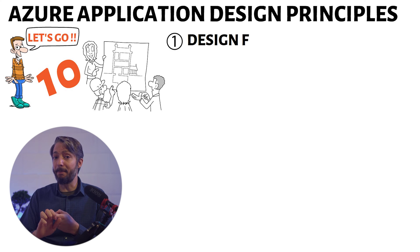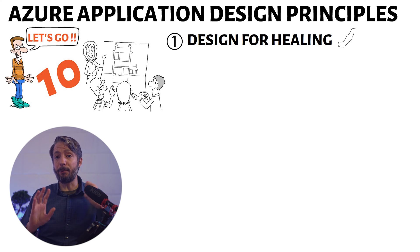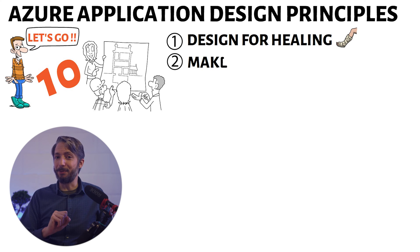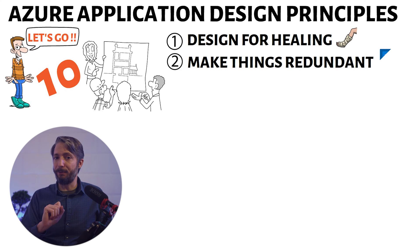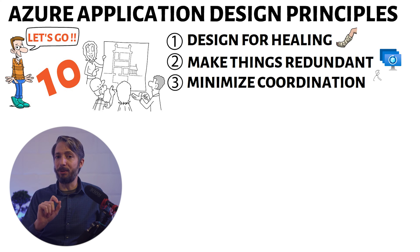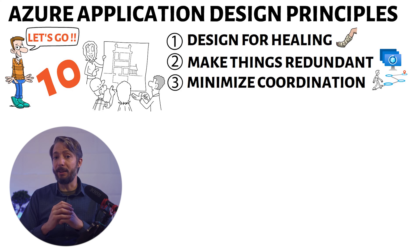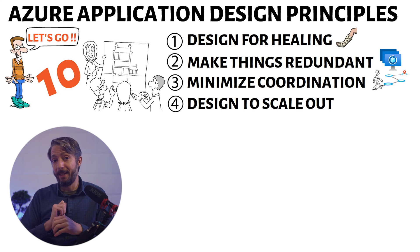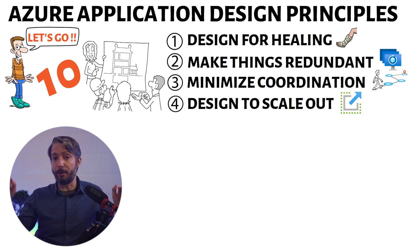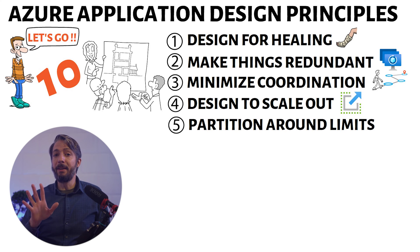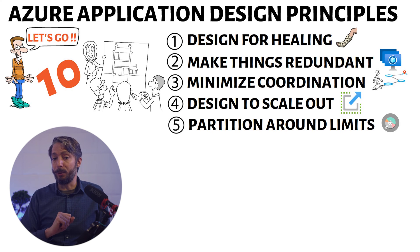First, we have design applications for healing — this handles how to handle failures and the different self-healing options. Secondly, make sure to make things redundant and avoid single points of failure. Three, minimize coordination between application services to achieve better scalability. Number four, design to scale out — enable your application to scale out horizontally, specifically based on demand.